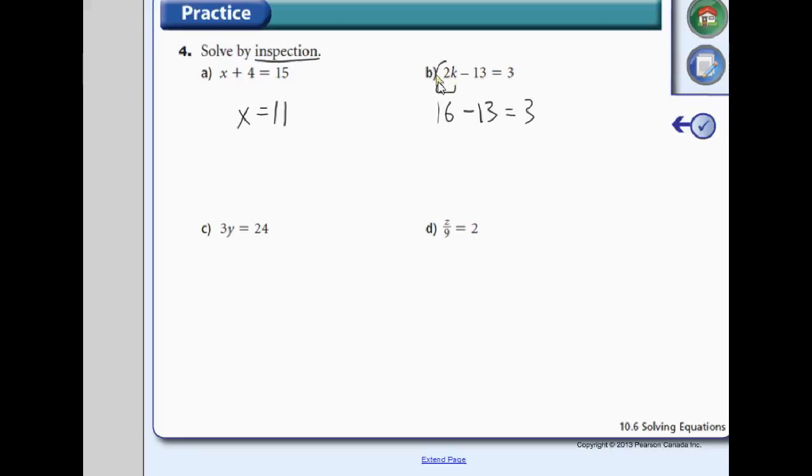So that means 2k, 2 times the number, has to equal to 16. So 2 times some number equals 16. Well, I know that 2 times 8 equals 16. So k has to equal 8.